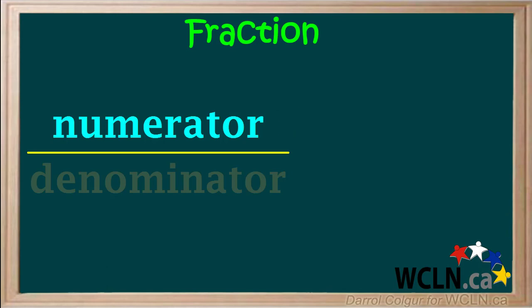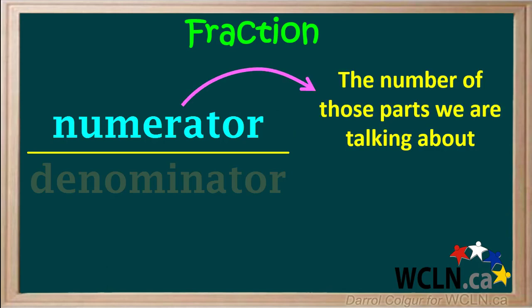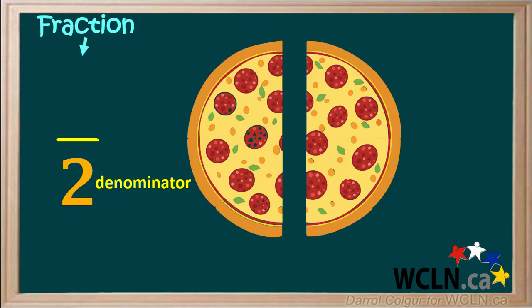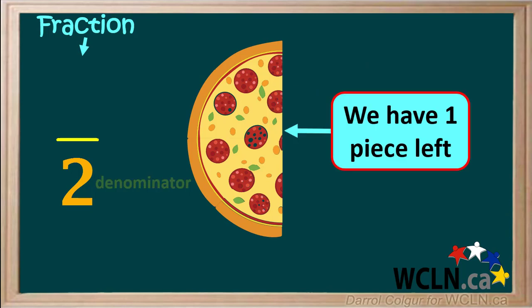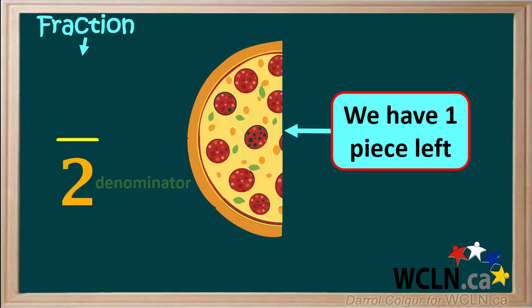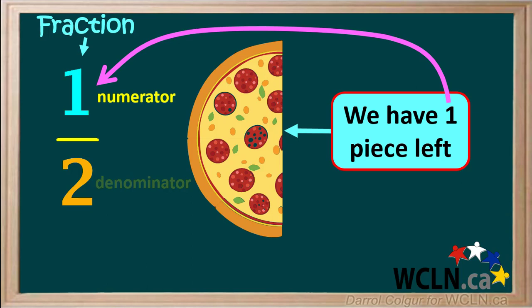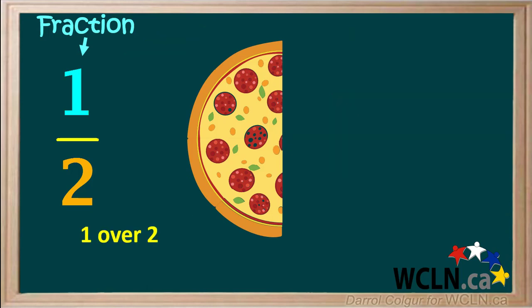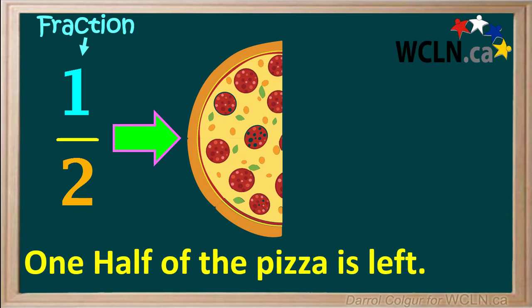So what does the numerator mean? The numerator is the number of those parts we're talking about. So let's go back to our pizza that was cut into two parts, giving us a denominator of two. Let's say someone ate the piece of pizza on the right. So out of the two original pieces, we have one piece left. The numerator is the number of parts we're talking about, so the one is our numerator. The fraction we made is one over two, which is also called one half.